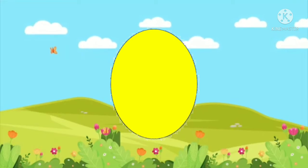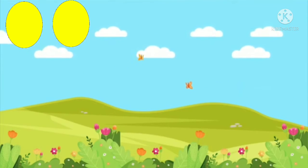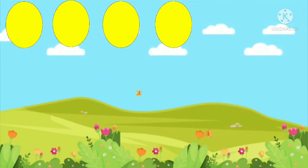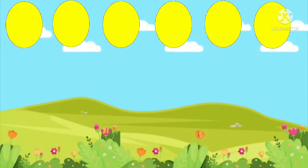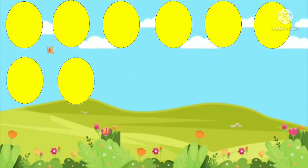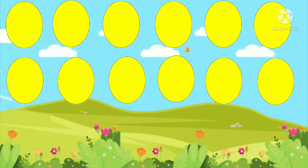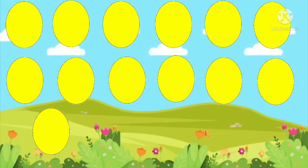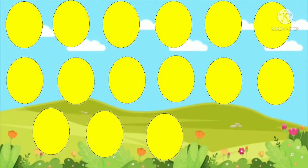Which shape is this, kids? Oval. Let's count them. 1, 2, 3, 4, 5, 6, 7, 8, 9, 10, 11, 12, 13, 14, 15. 15 oval shapes.